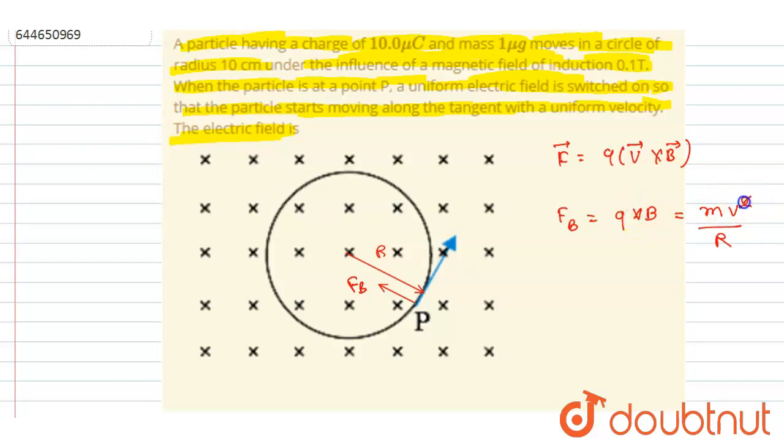From here you can get the velocity. If you see, it is moving in a circle of radius this, and magnetic field this, so from here you can get the velocity. So from here I will write this velocity is equal to qBr/m.